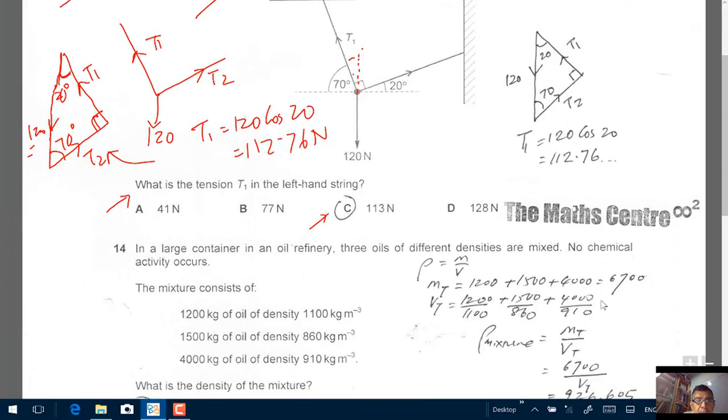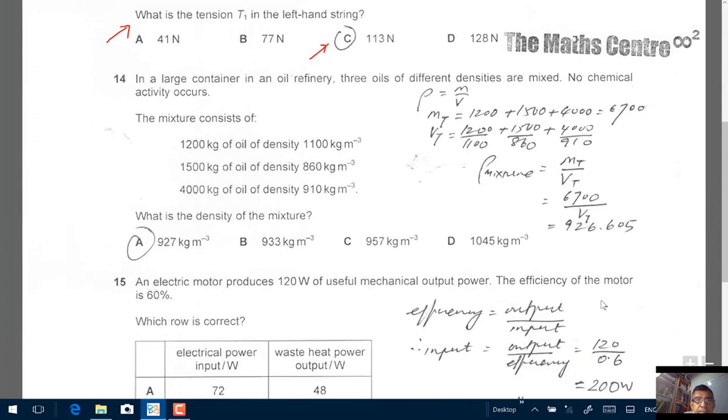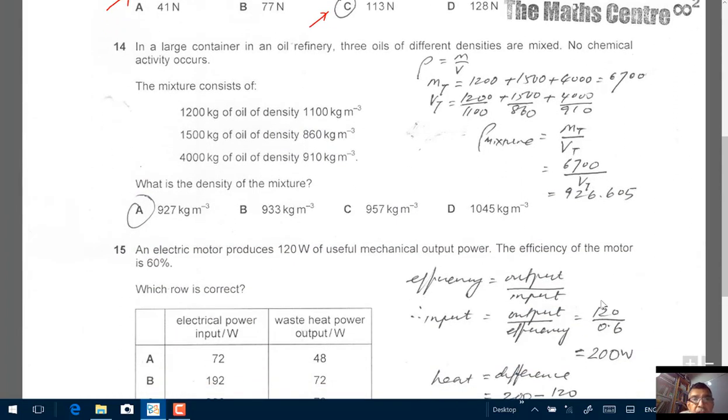Next question, number 14. In a large container in an oil refinery, three oils of different densities are mixed. No chemical activity, no chemical reaction takes place. The mixture consists of all these three kinds of oils with different densities. And we're asked to find the density of the mixture.